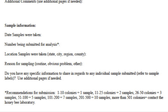The next section of the registration form is the sampling information. It's really important for me to know when you took those samples — not when you sent the sample to me, but when you actually went out to the colony and scooped your bees up into the container. Also note the number being submitted for analysis. I can't diagnose every single sample, so on the bottom of the first page is the recommended number of colonies to submit. For example, if you have one to ten colonies, you can send one sample. That makes it easier for me and I can get you your data faster.